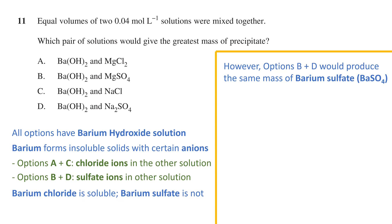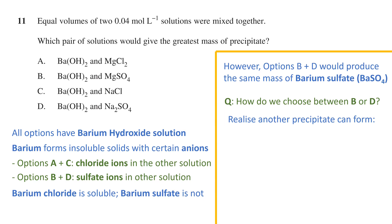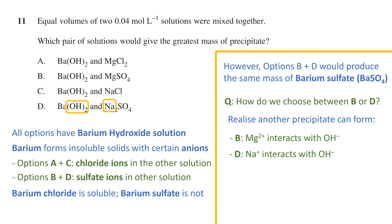However, if we consider options B and D, the mass of barium sulfate produced would be the same in each option. This is because the solutions have the same concentration and volume, and therefore the same number of moles. Plus, the ratio of barium to sulfate is the same in both B and D. So we look at the other ions. In option B, the magnesium ions from the sulfate interact with the hydroxide ions from the barium solution, while in option D, the sodium ions interact with the hydroxide ions.